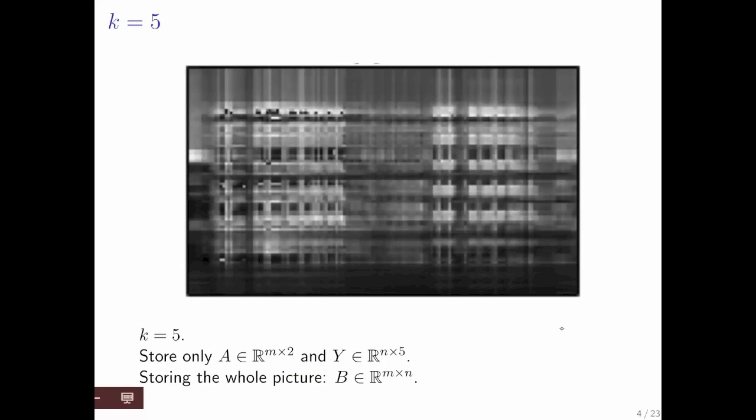Go on to five columns for each of them, and you get this. And you can start recognizing the picture.